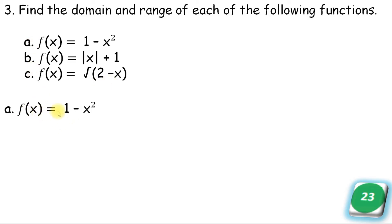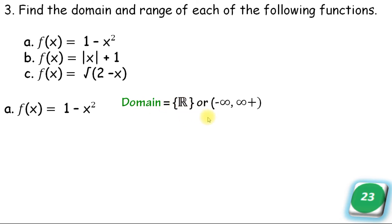For the function f of x equals 1 minus x squared, the domain is all real numbers, from negative infinity to positive infinity. For the range: when x equals 0, f equals 1 minus 0, which is 1. When x equals negative 1, f equals 1 minus 1, which equals 0. When x equals 2, f equals 1 minus 4, which equals negative 3.